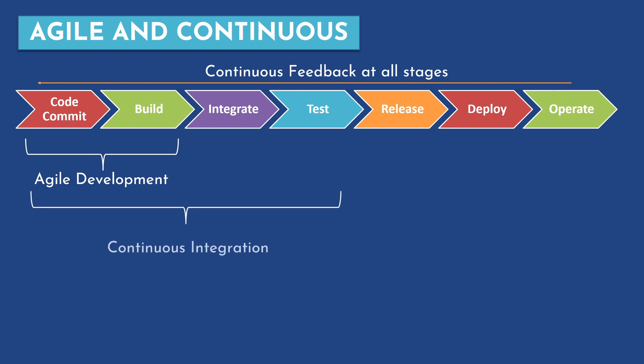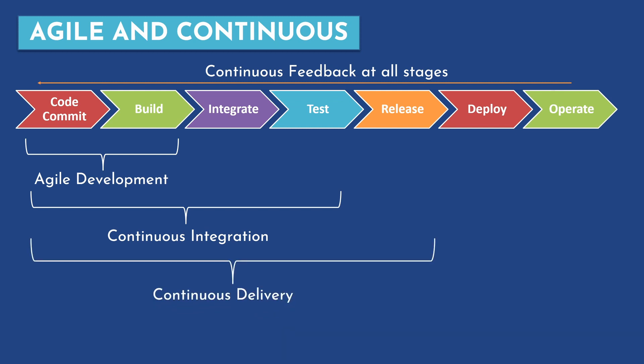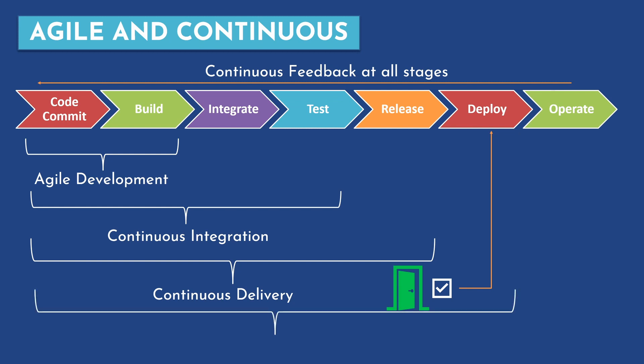Then we have CI, which is continuous integration. It goes from code commit all the way through testing and integration. Then we have CD, which is continuous delivery — delivery of code from the developer all the way to production. However, it requires a gate before the production deployment; usually a manual approval is required, and once it is approved, only then is deployment to production triggered. We also have another important term: continuous deployment. Continuous deployment is deploying the feature all the way to the production environment without any manual intervention.